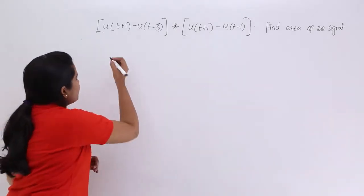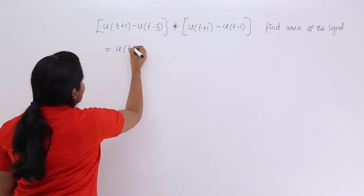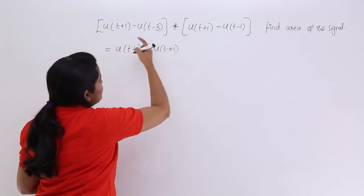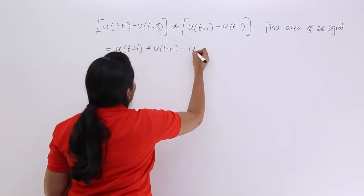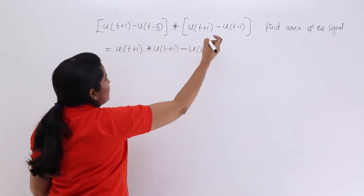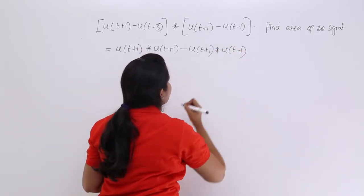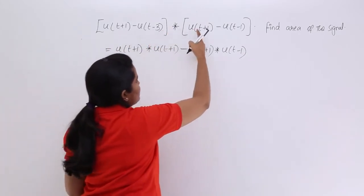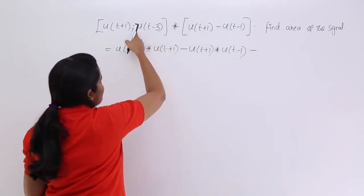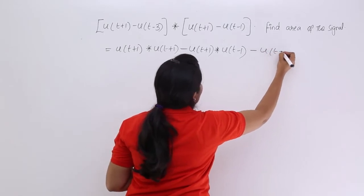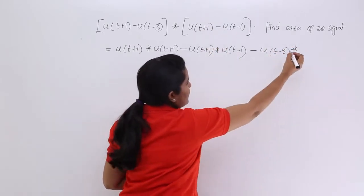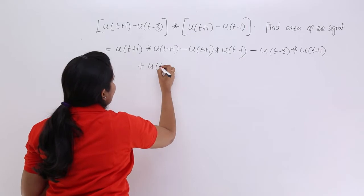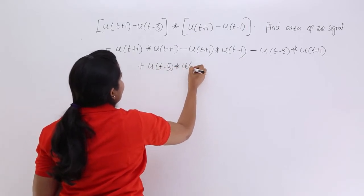So here I am doing individual convolution of u(t+1) with u(t+1). Then, with minus sign, u(t+1) convolution with u(t-1). Now another convolution we need to do is u(t-3) with u(t+1), and considering minus, u(t-3) convolution with u(t+1), minus into minus gives plus u(t-3) convolution with u(t-1).